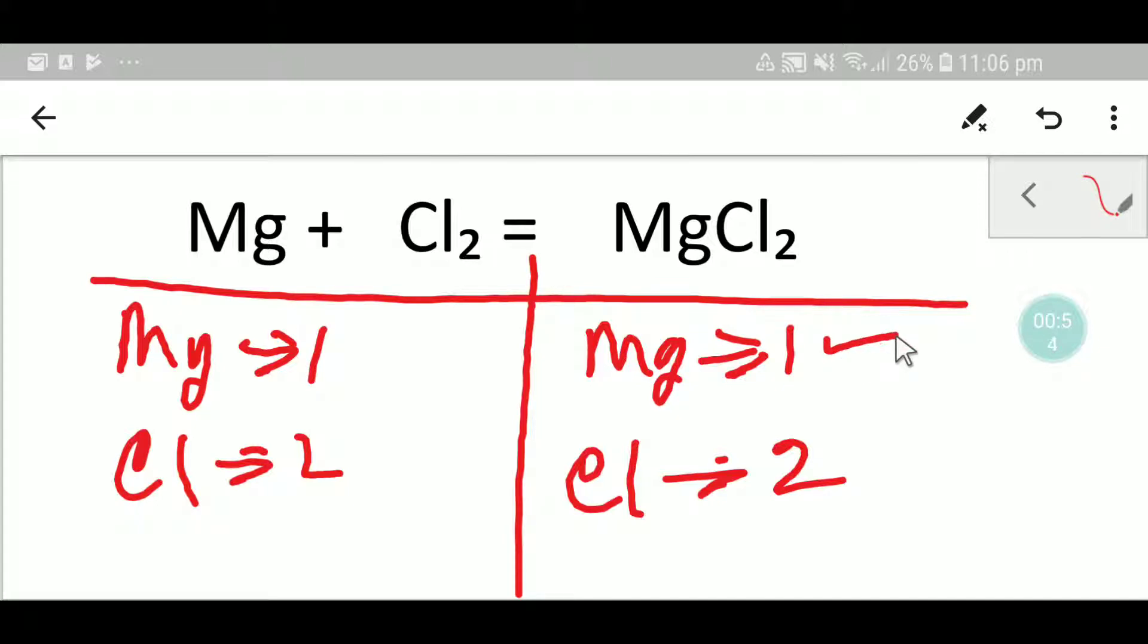Here magnesium one, one, so magnesium is already balanced. Chlorine two, two, so chlorine is also balanced. You can say that this is the balanced equation. Thank you for being this video. Be well.